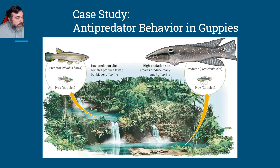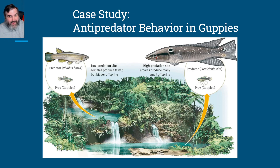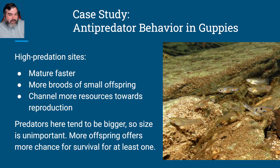You can notice the trends starting to appear here — look at the number of babies that each guppy has at each location. This picture really helped clarify: the reason the fish can't swim back upstream is that it's a waterfall. They're not salmon.